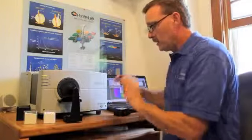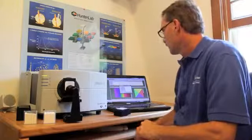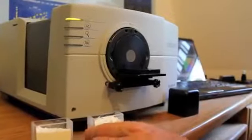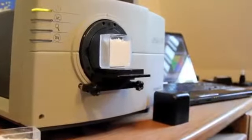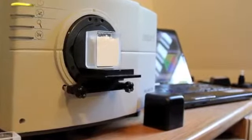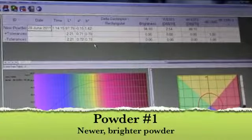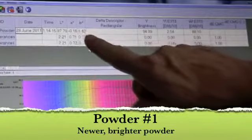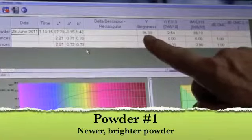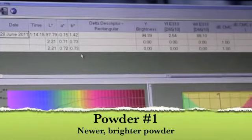We'll measure our first sample, which is a nice bright powder, and define this as our standard. With our first reading, we have a nice bright product with very little color. The A and B value is close to zero, a nice bright product with a value of 94, a yellowness index of just two, and a whiteness index of 88.